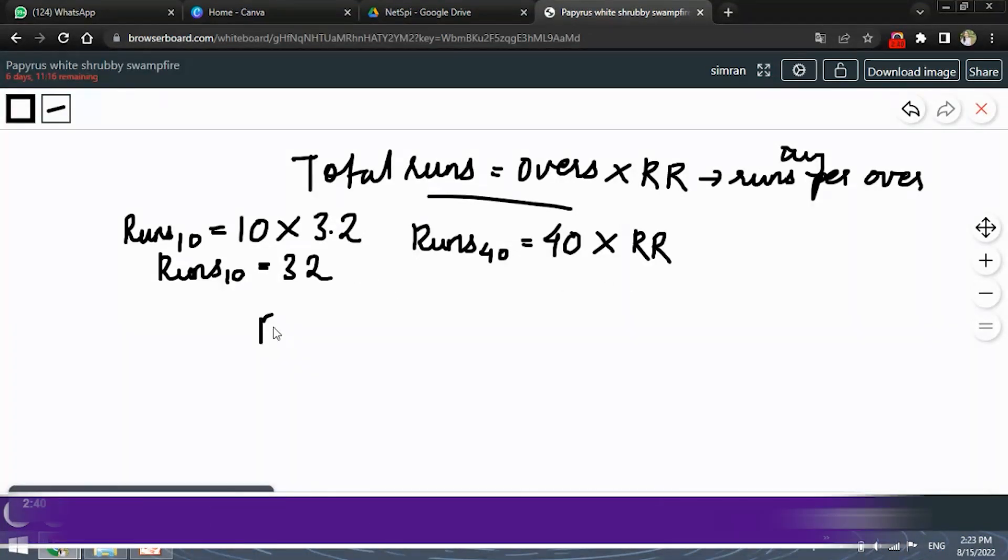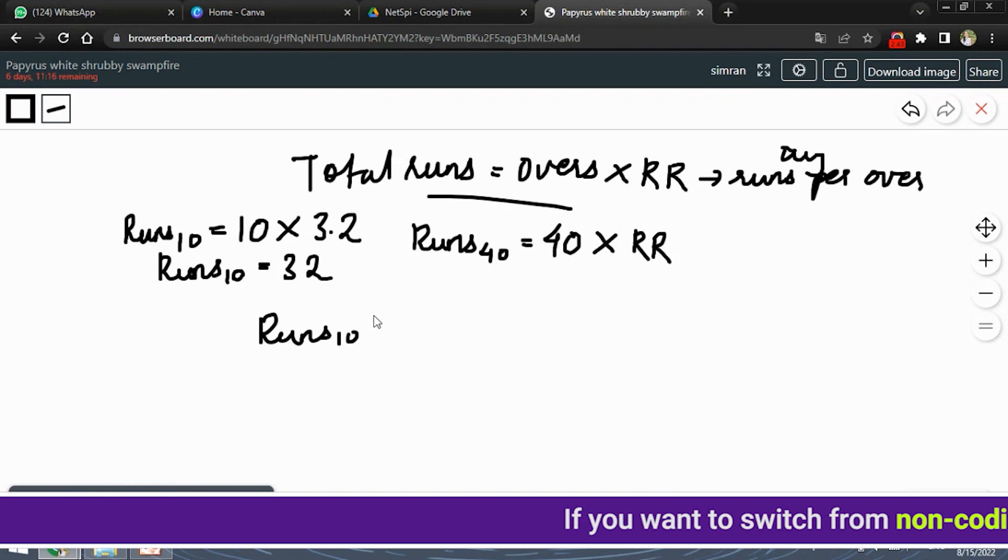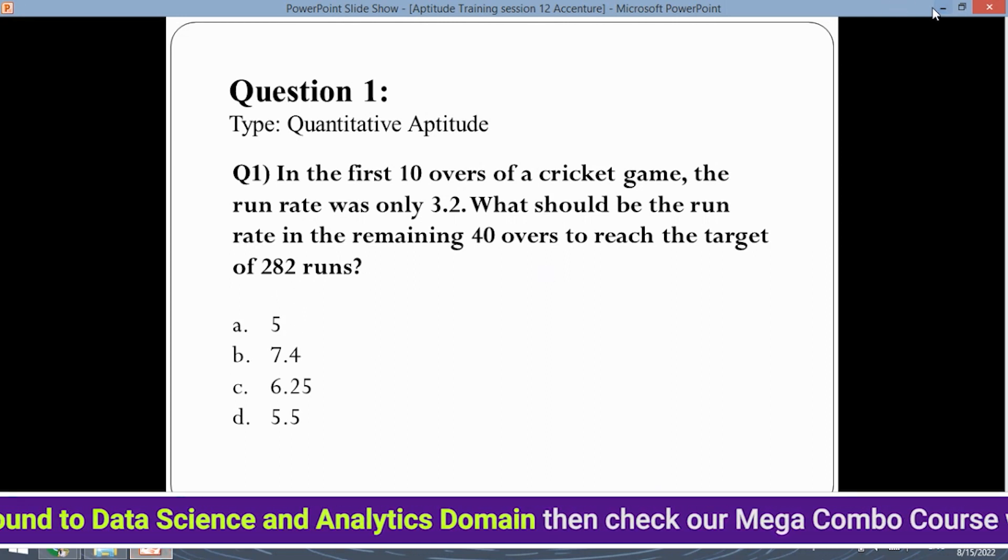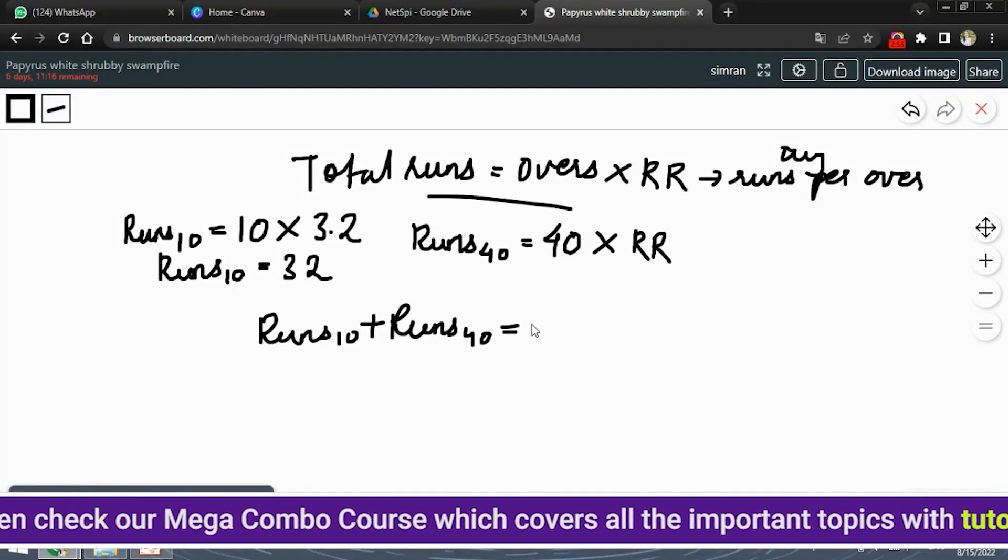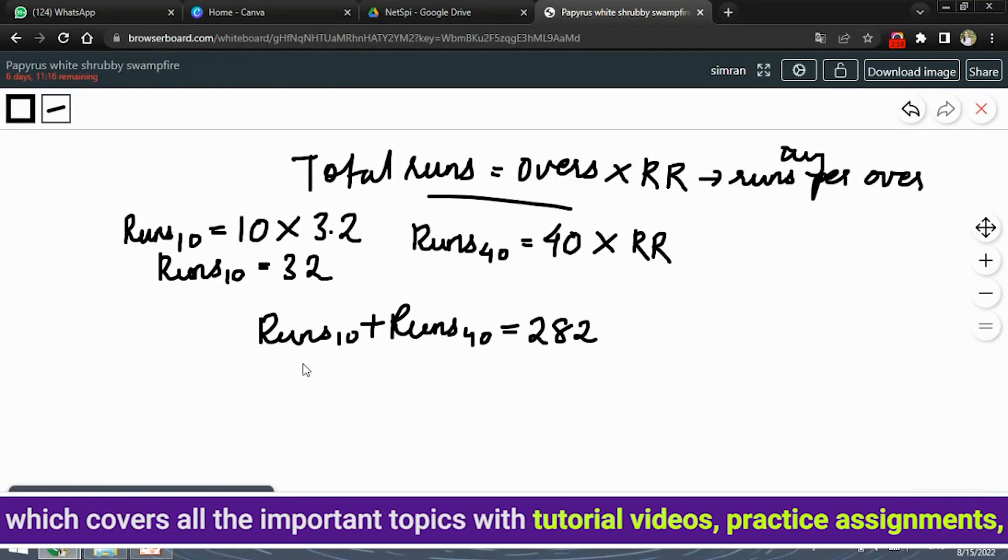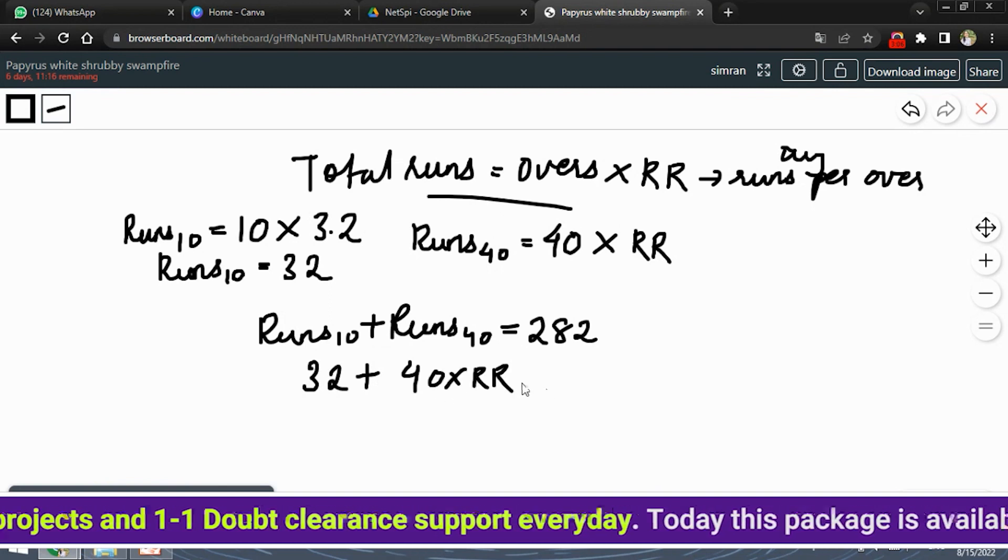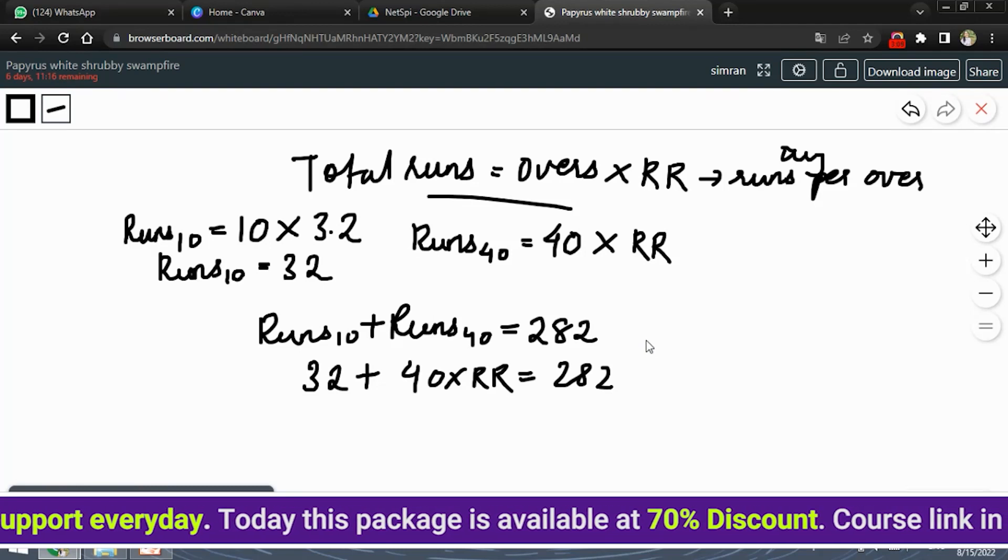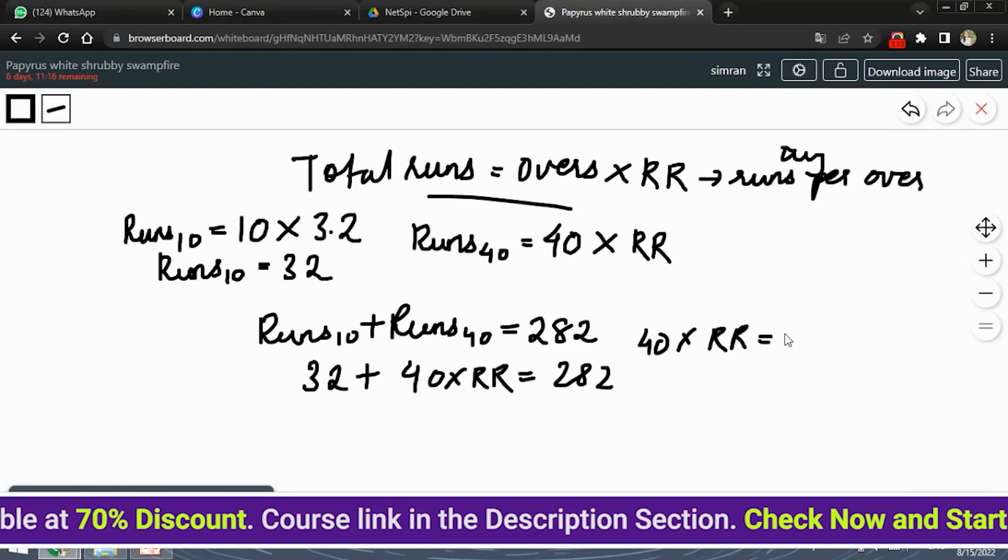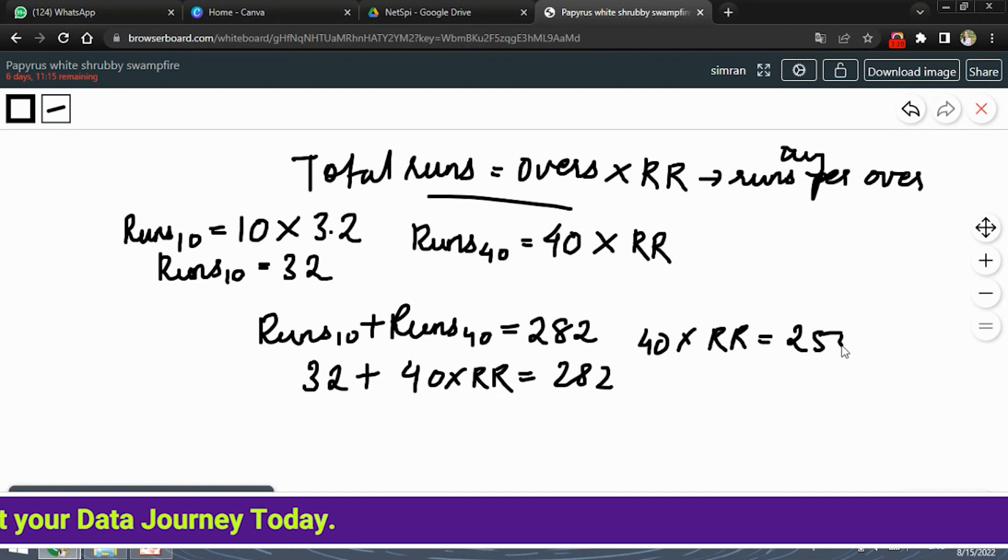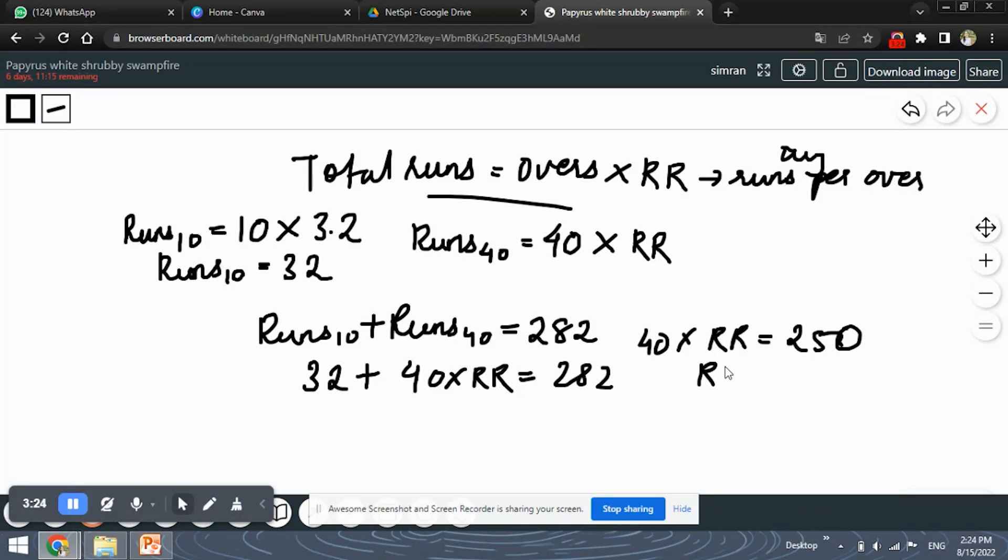So now, the total runs that are scored will be runs in the first 10 overs and the runs in the next 40 overs. And the total runs are given, right, 282 runs is the target. So the total is 282. Simply substitute both the values, runs in the first 10 overs are 32 plus 40 into RR, which is 282. So solve this, 40 into RR will remain and subtract 282 minus 32, so you will be getting 250.